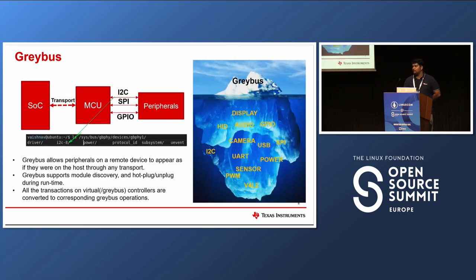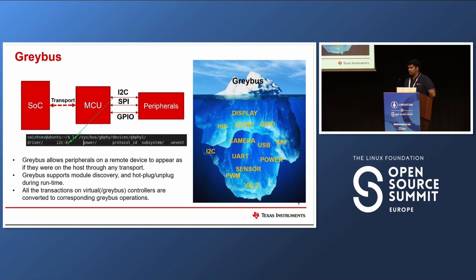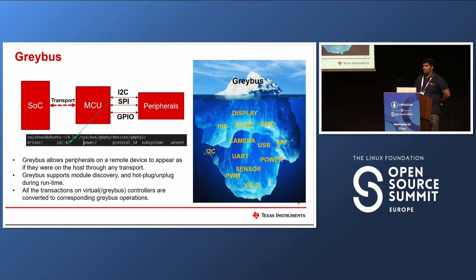Regarding what kinds of devices cannot be emulated: Greybus packetizes transactions on the controller side, so you cannot emulate something like an SPI controller — a Greybus SPI controller is a virtual SPI controller and you cannot do devices like that. You can only emulate the client devices. Thank you.